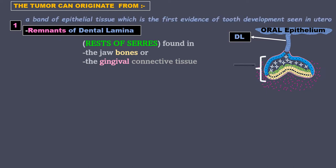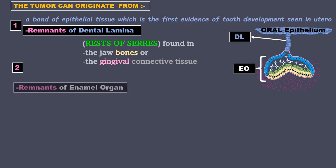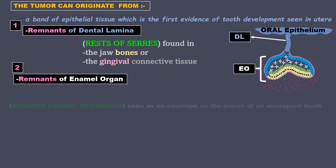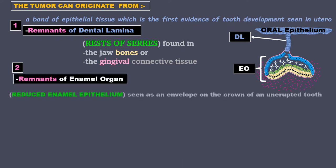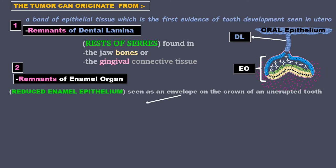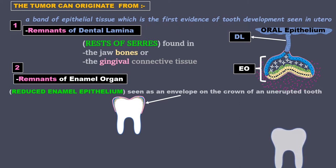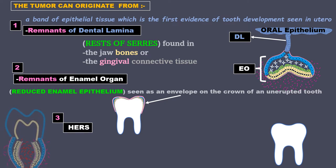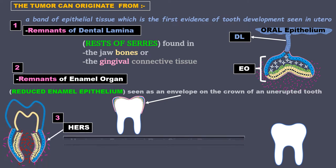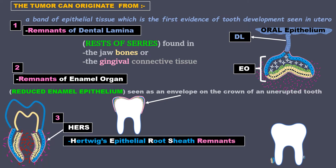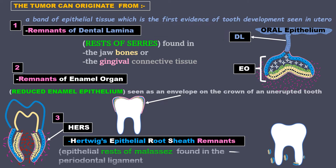This is the enamel organ with all its different types of cells inside. The tumor can also originate from remnants of enamel organ, known as reduced enamel epithelium, seen as an envelope on the crown of an unerupted tooth. Once the tooth erupts, this gets worn off on its own. Number 3, we have HERS — Hertwig's epithelial root sheath remnants — called the epithelial rest of Malassez, found in the periodontal ligament.